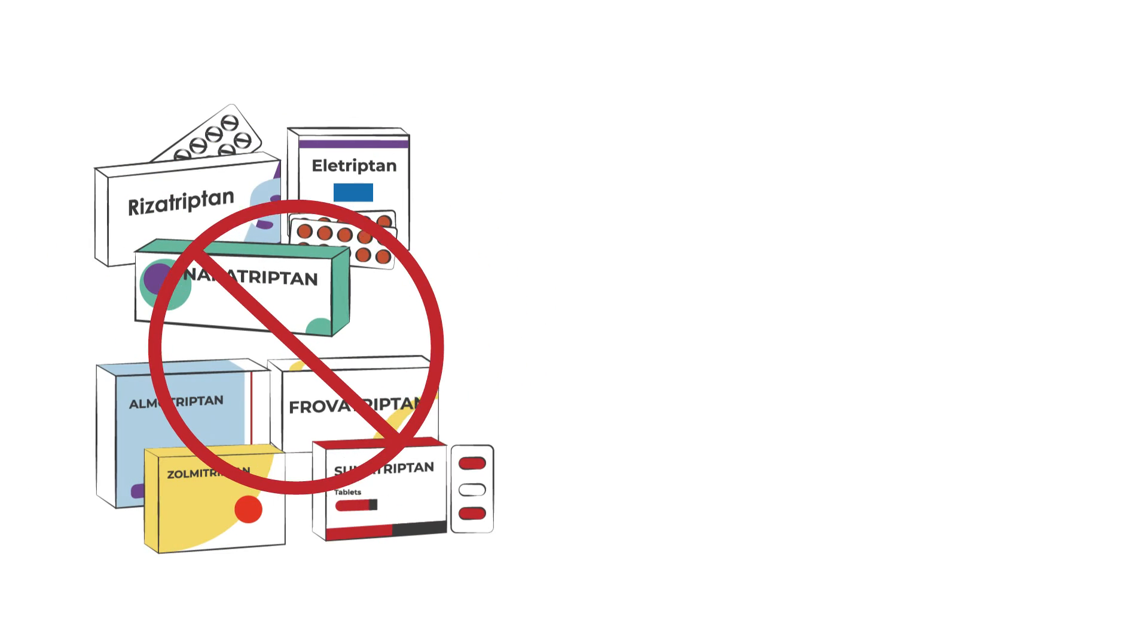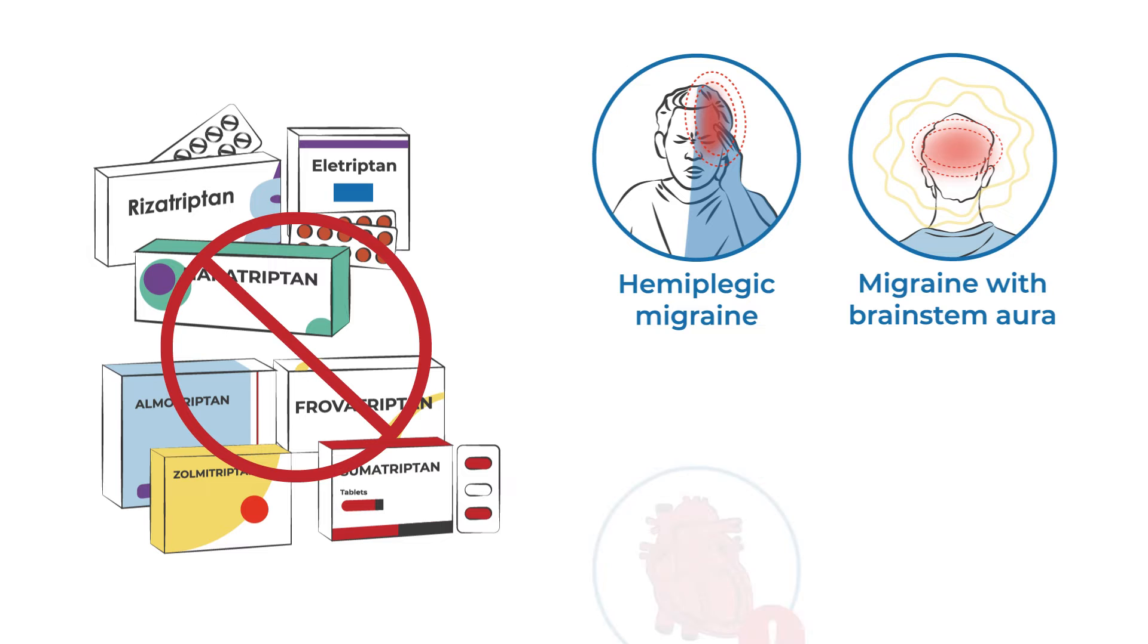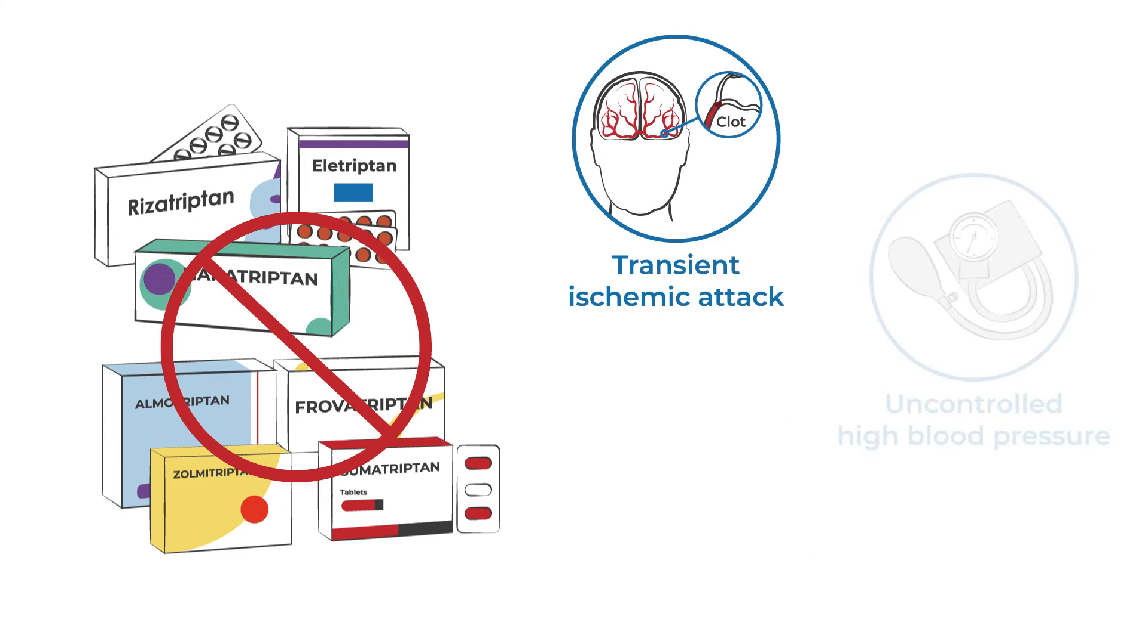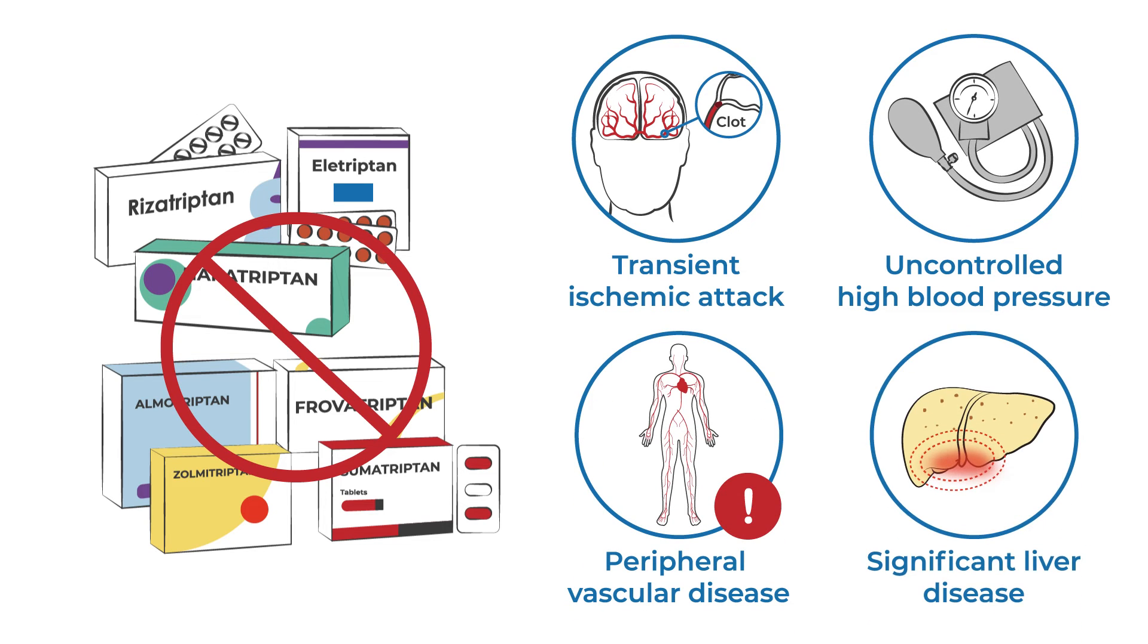Triptans are typically avoided in people who have a history of hemiplegic migraine or migraine with brainstem aura, heart disease, stroke, or transient ischemic attack, uncontrolled high blood pressure, peripheral vascular disease, or significant liver disease.